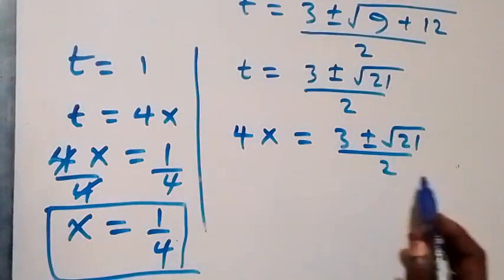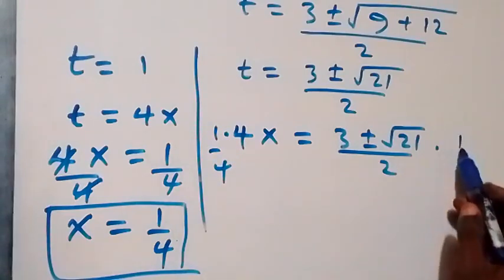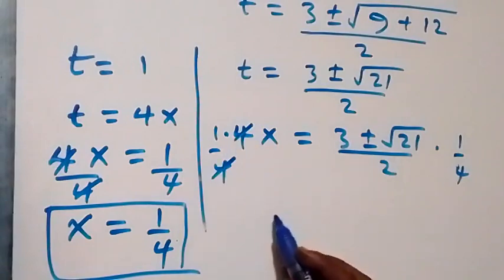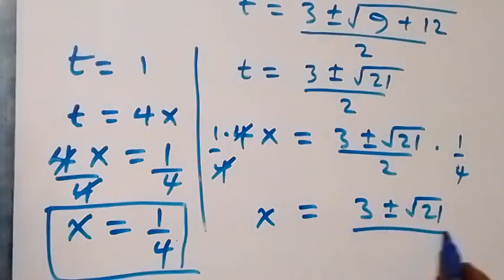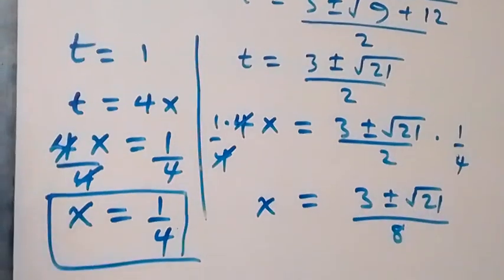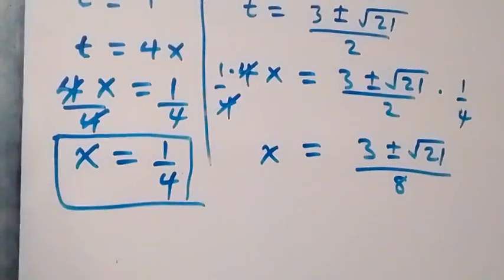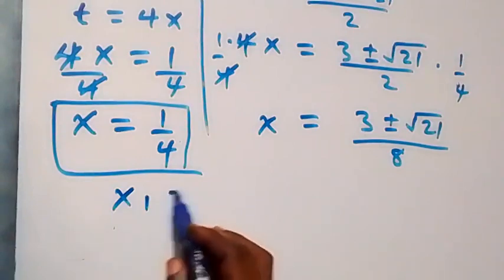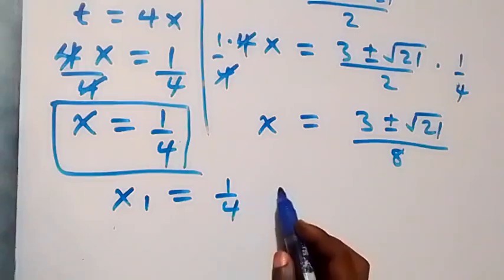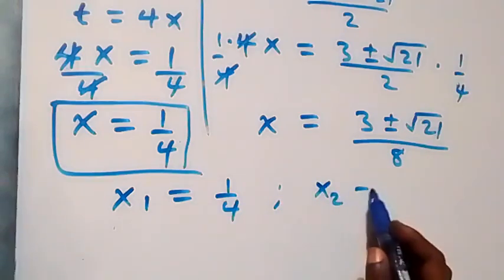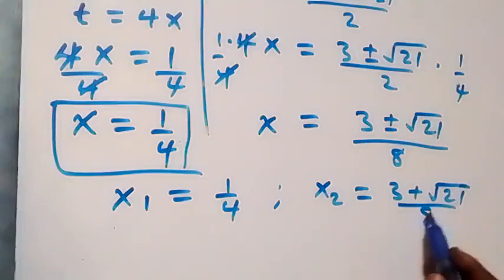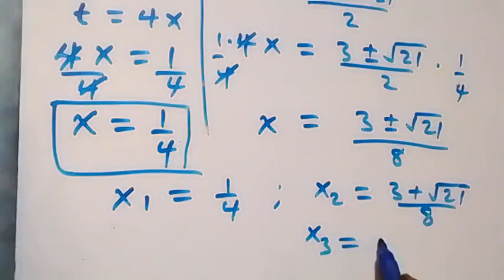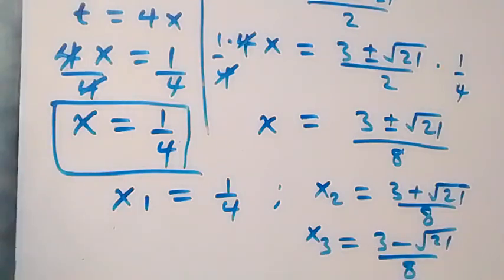To get x from the second case, we multiply both sides by 1 over 4, which gives x equals (3 plus or minus root 21) over 8. Together we have three solutions: x₁ equals 1/4, x₂ equals (3 plus root 21) over 8, and x₃ equals (3 minus root 21) over 8. These are the solutions to this problem.